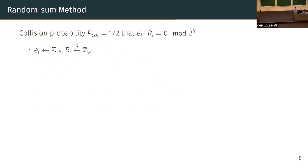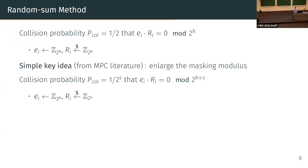Our key idea, borrowed from the MPC literature, is to increase the masking modulus with a parameter s. By sampling randomness only from s bits, there are no overflows that produce modular reductions to zero. Enlarging the masking modulus eliminates the large collision probability. By setting parameter s, we can choose this probability freely and set it at an appropriate security level.